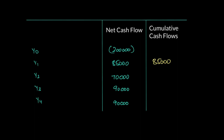In year two, the firm earns another 70,000 as net cash flow. Adding this to the 85,000 already earned gives 155,000 as the cumulative cash flow. So by year two we've recovered 155,000. Remember, our job is to recover 200,000.